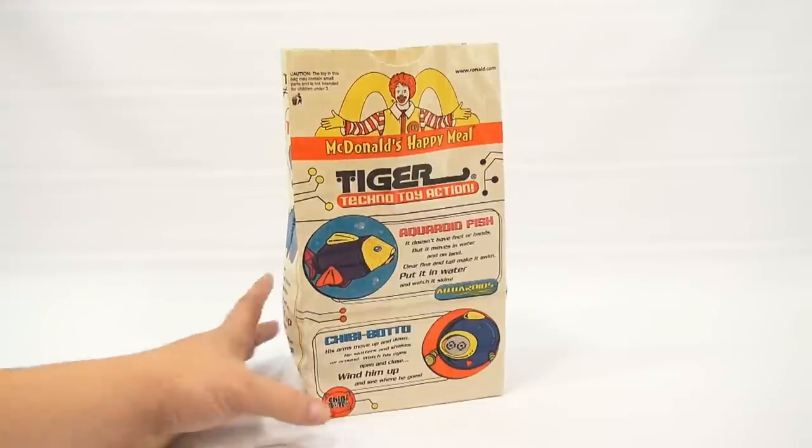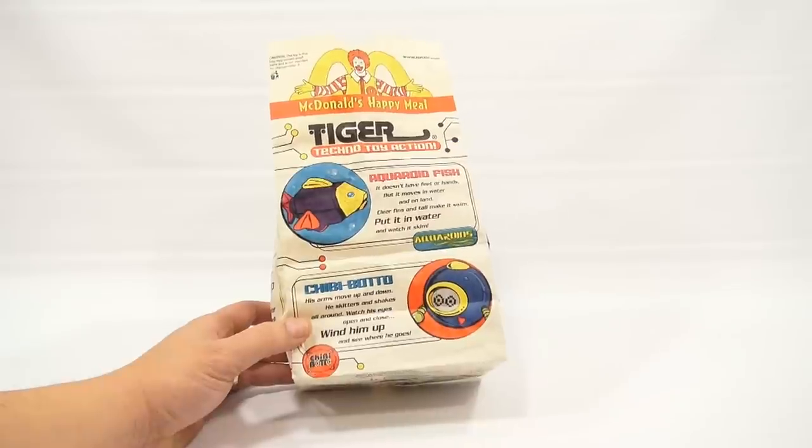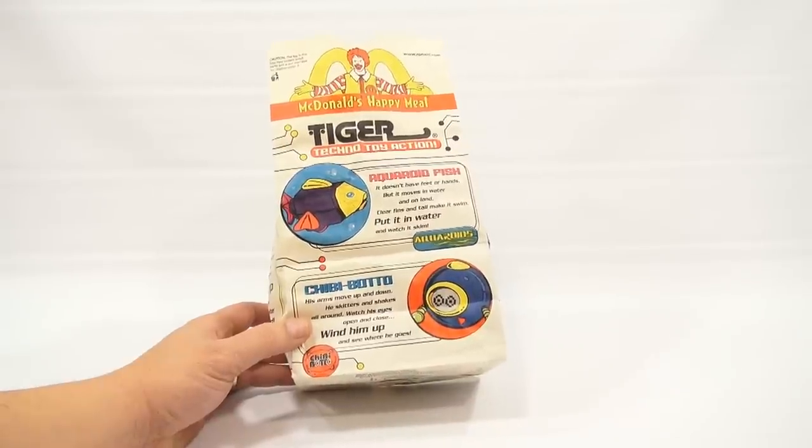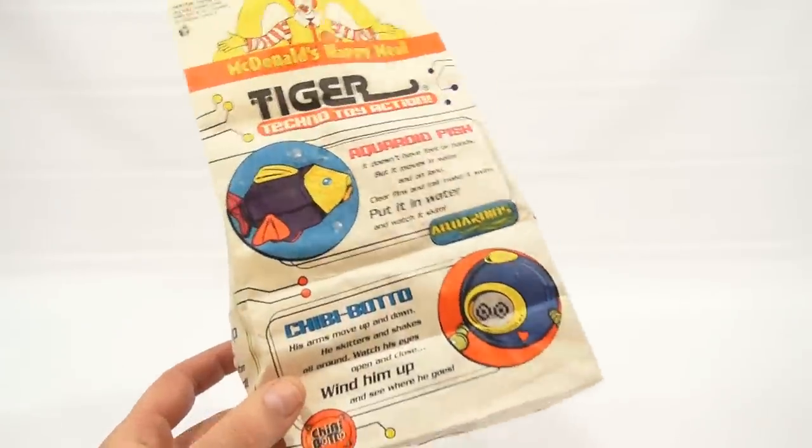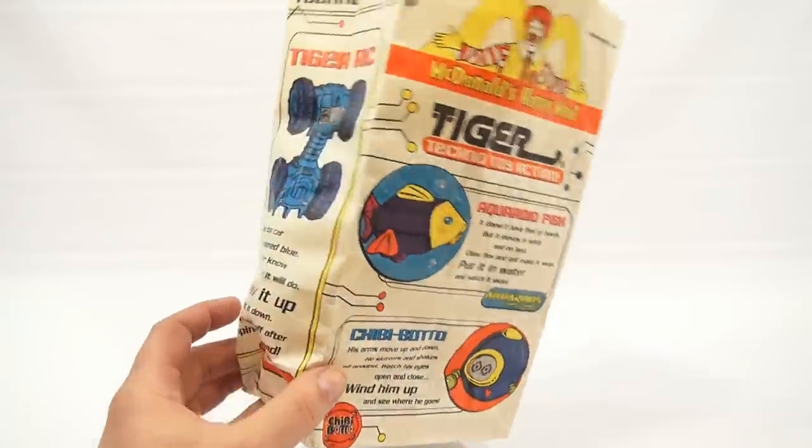And then there's the Chibi Boto. Has arms move up and down. He skitters and shakes all around. Watch his eyes open and close. Wind him up and see where he goes. So that's two of them.